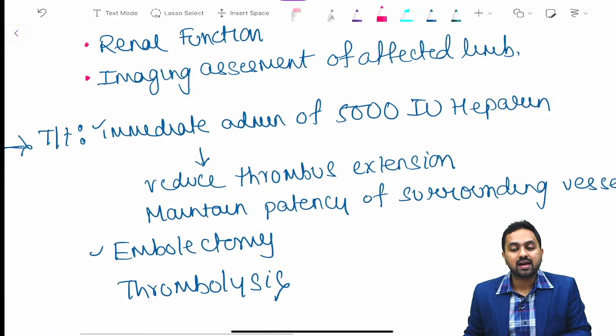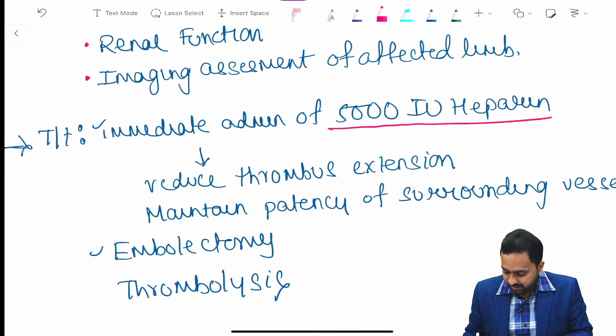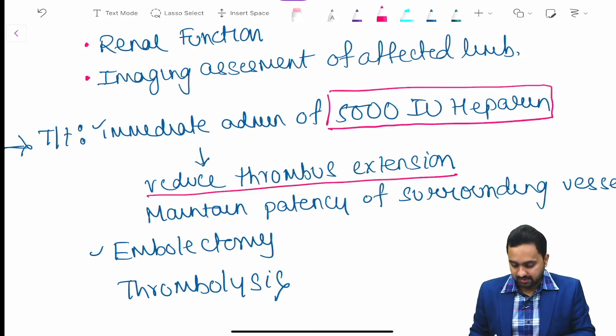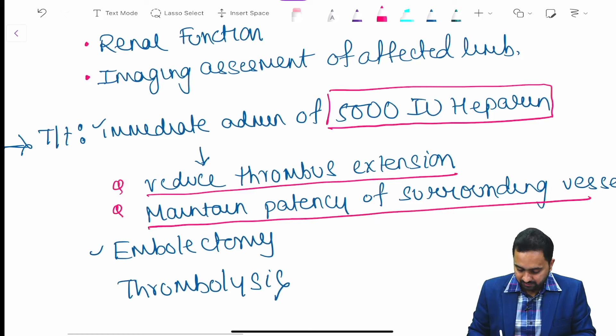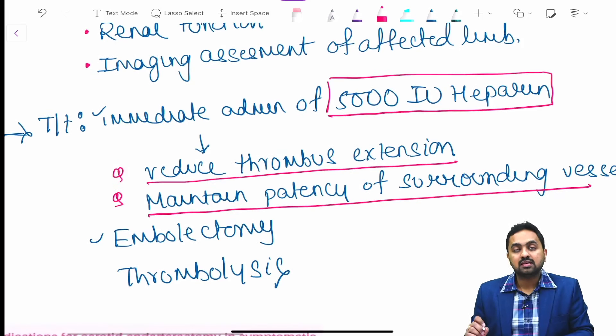Treatment would include immediate administration of 5000 international units of heparin to reduce thrombus extension and maintain potency of surrounding vessels. Following this, the patient would either require embolectomy or thrombolysis.